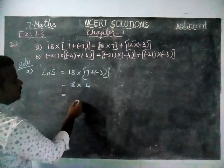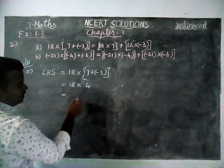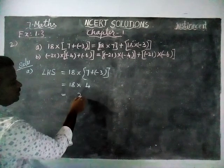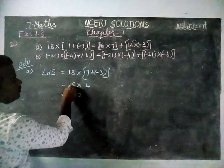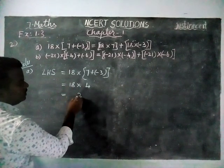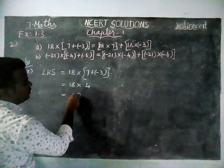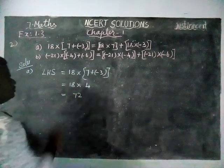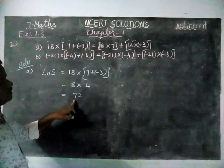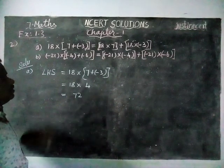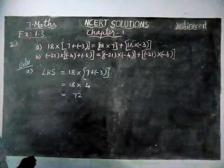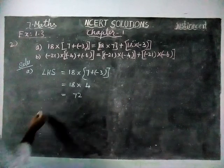So the answer is plus. 8 fours are 32, write 2 and carry 3. 1 four is 4, and 4 plus 3 is equal to 7. So the left hand side answer is 72. We will now check it for the right hand side.